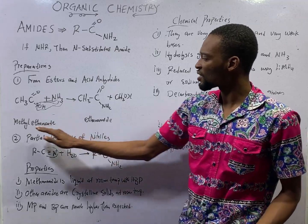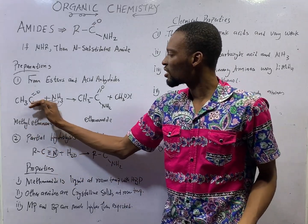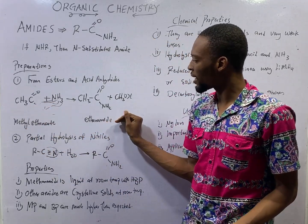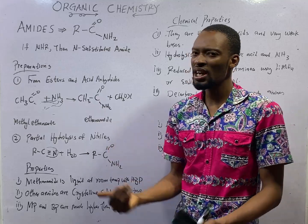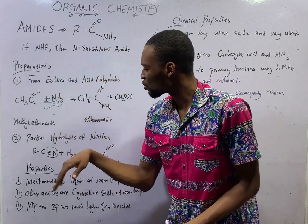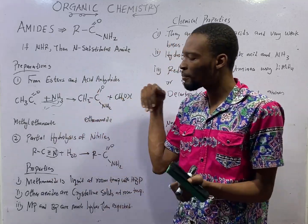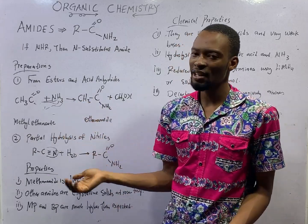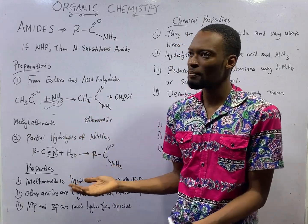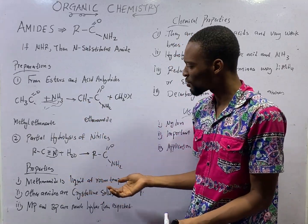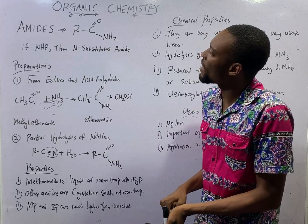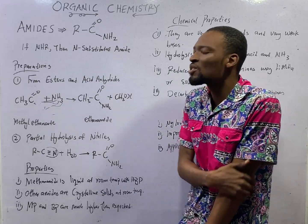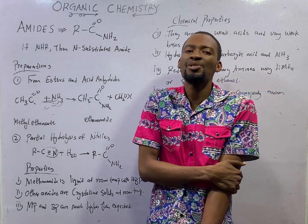This is methyl ethanoate. This is ethanamide. To name amides, name the acyl group and add 'amide' to the name: methanamide, ethanamide, propanamide, and so on. We can also prepare amides from partial hydrolysis of nitriles.